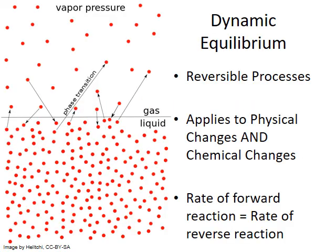We've already introduced the concept of dynamic equilibrium when we discussed vapor pressure and evaporation. Evaporation is a reversible process, meaning molecules of any liquid can evaporate and go into the gas phase. At the same time, gas molecules can condense back into the liquid phase. When these two processes are in equilibrium in a closed container, we reach a steady state condition of constant vapor pressure.